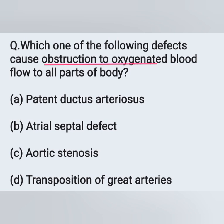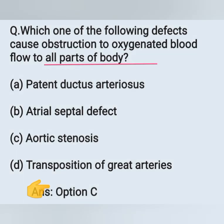Which one of the following defects causes obstruction to oxygenated blood flow to all parts of the body? Option A: patent ductus arteriosus. Option B: atrial septal defect. Option C: aortic stenosis. Option D: transposition of great arteries. Oxygenated blood flows to all parts of the body via the aorta, so it is aortic stenosis. Option C is the correct answer.